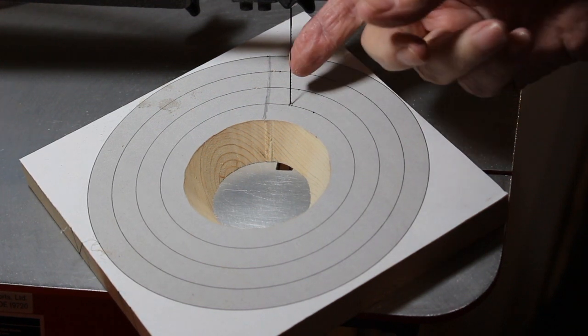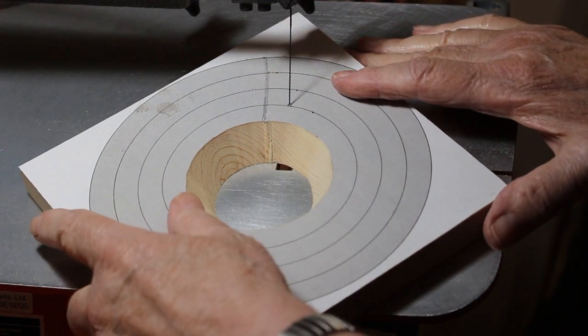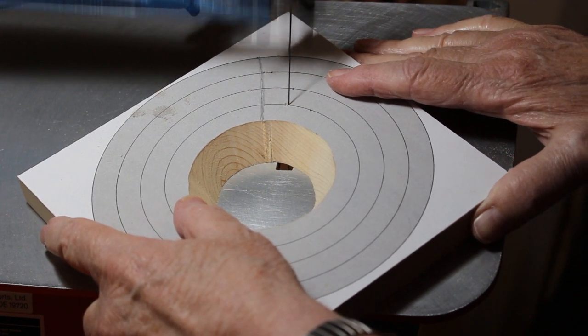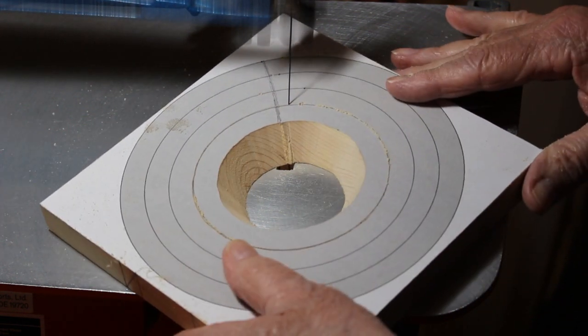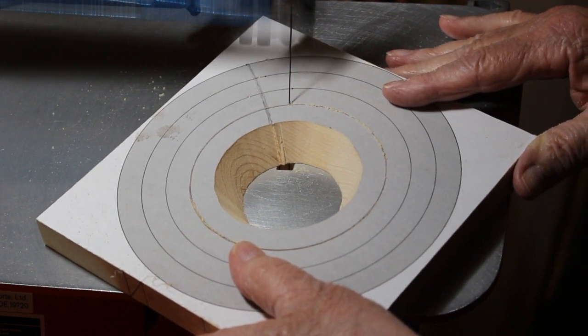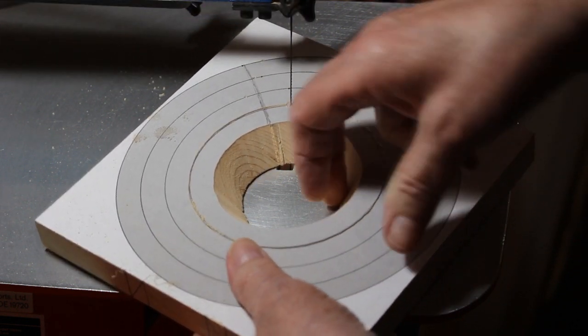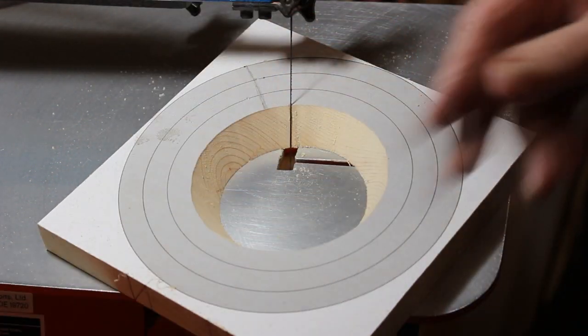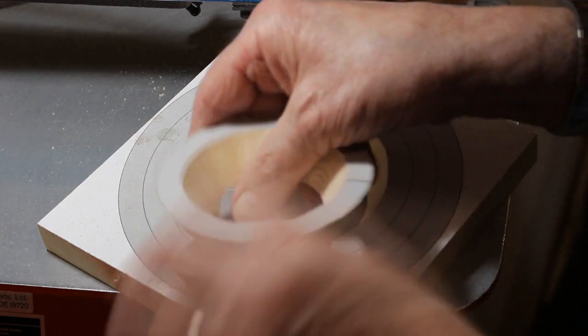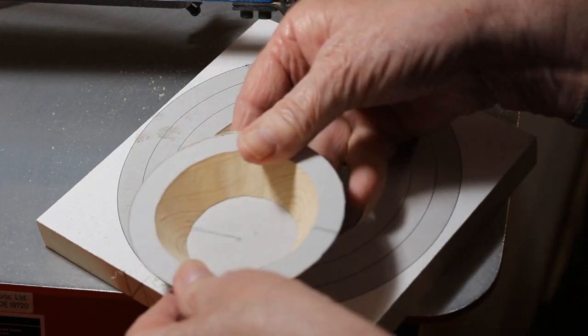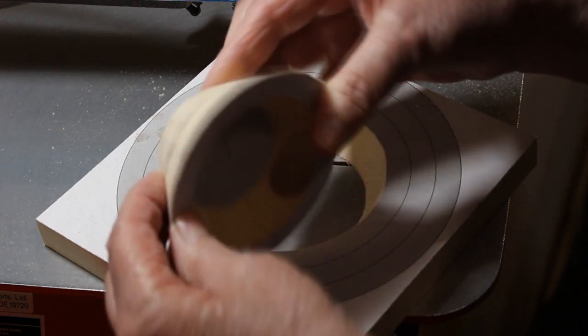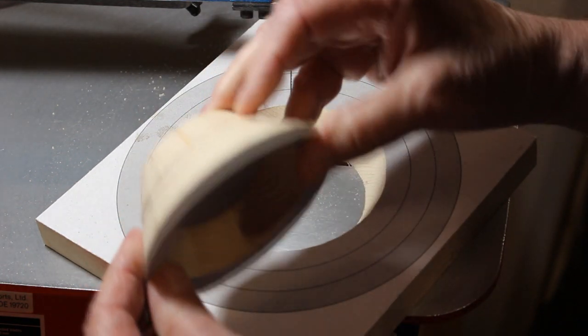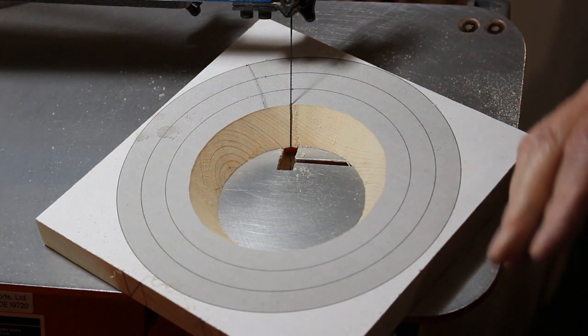I've got my blade threaded up through the next ring. So I'll just go ahead and cut it out. There's the second ring done. And as you can see, they stack on top of each other. And we'll just keep building rings until we get through this whole piece of wood.